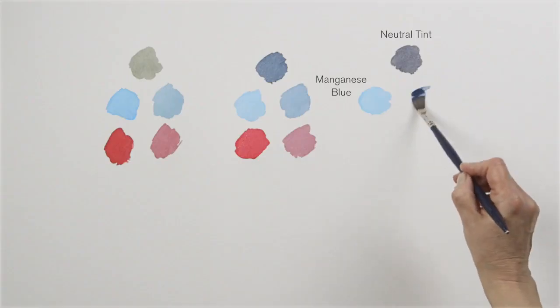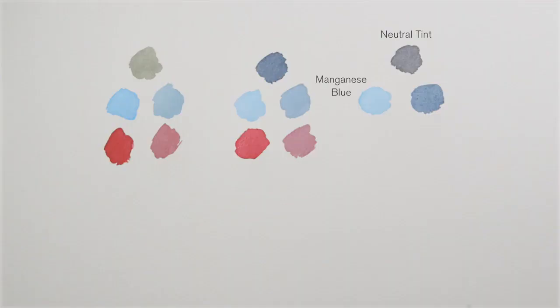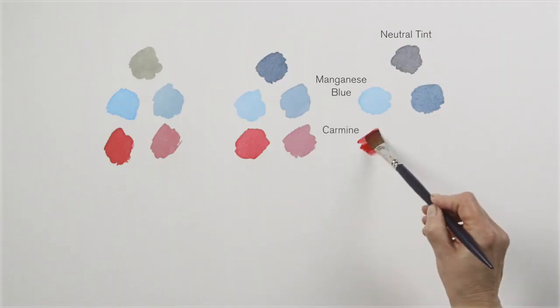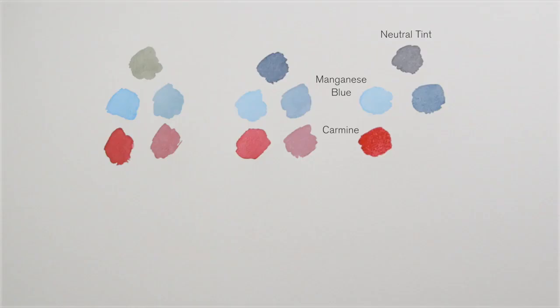Look what happens to the manganese blue hue when I add the neutral tint to it. Once more look at the way it alters the carmine.